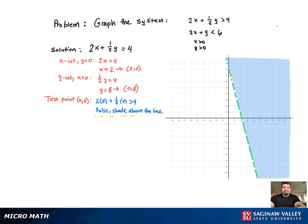And now we'll move on to the second inequality. Again, we're going to use the x and y-intercepts, starting with the x-intercept. And we get the point (2, 0).